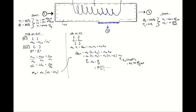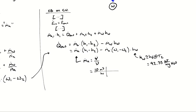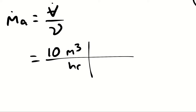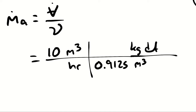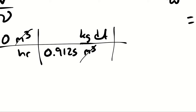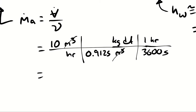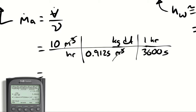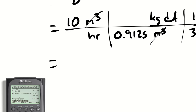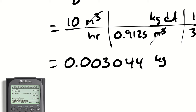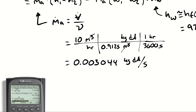I'll start with the mass flow rate of dry air: 10 cubic meters per hour divided by 0.9125 cubic meters per kilogram gives kilograms of dry air per hour. One hour is 3600 seconds, so the mass flow rate of dry air is 0.003 kilograms per second.